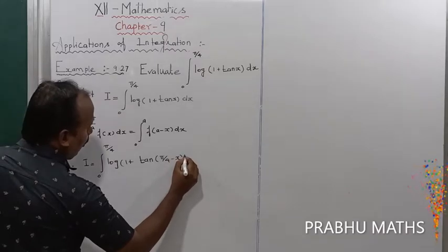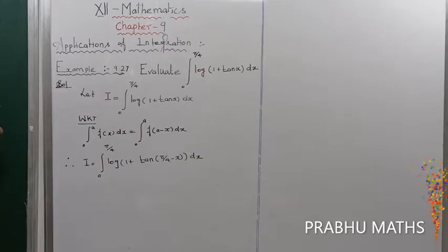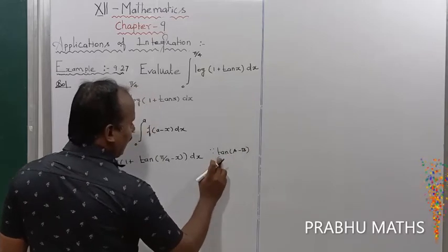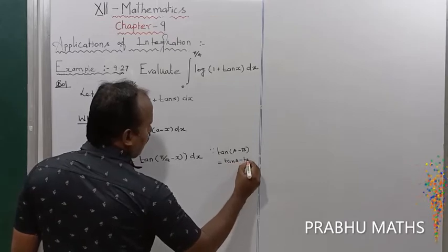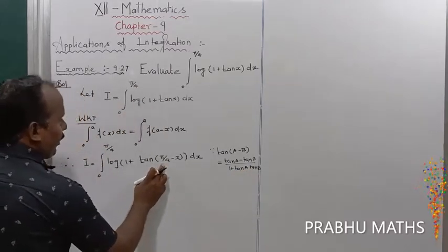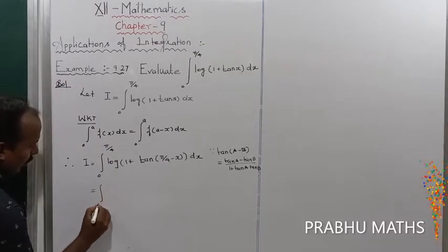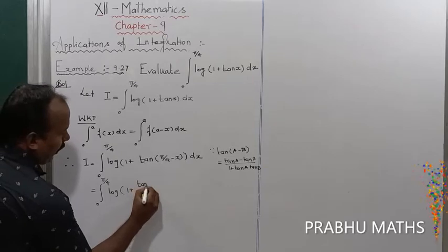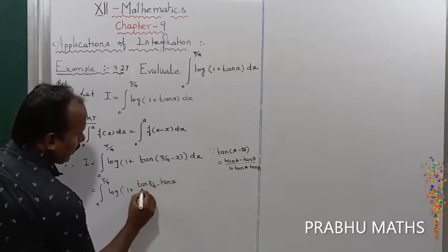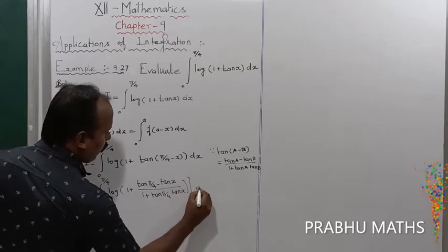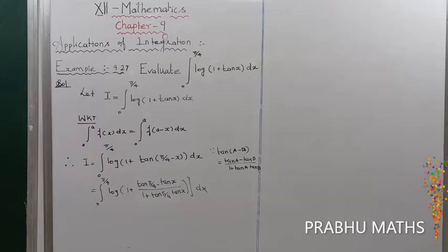So we get log(1 + tan(π/4 − x)) dx. There is a formula for tan(A − B): tan(A − B) = (tan A − tan B) / (1 + tan A · tan B). Here A is replaced by π/4 and B is replaced by x.